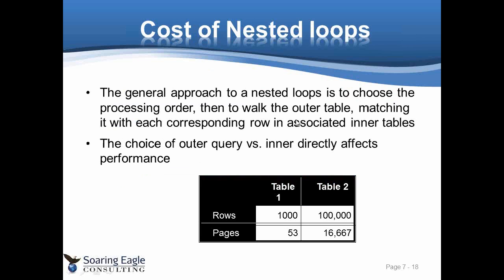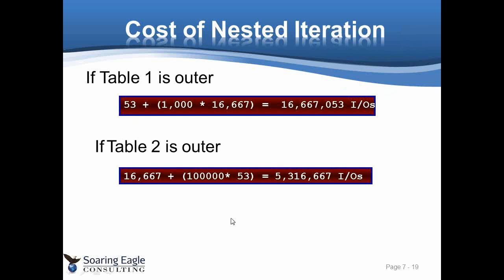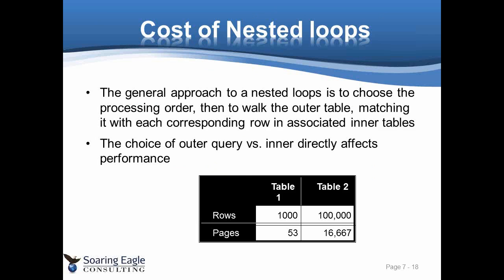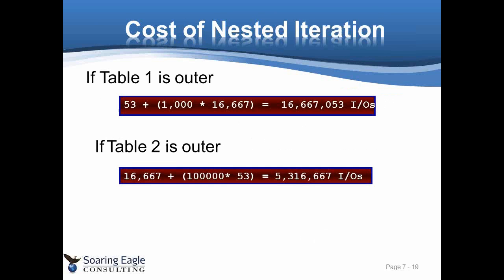To quantify with specific numbers: for each row in the outer table, we read all corresponding pages in the inner. So pages in the outer — 53 — plus the number of rows matching the outer, which is 1,000, times the number of potential matching pages in the inner, which is 16,667. Joining from table one to table two, we've got about 16 million page requests — IOs, not necessarily physical IOs. These are worst-case situations and not necessarily exactly what we'll hit.